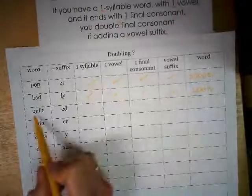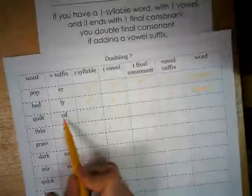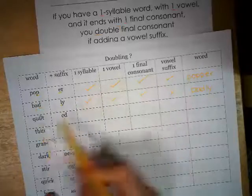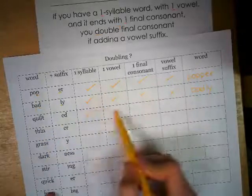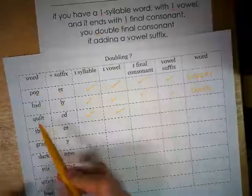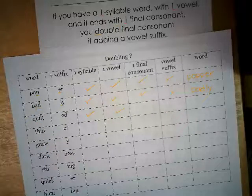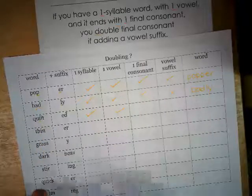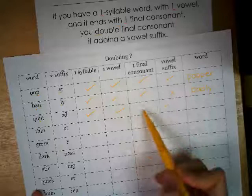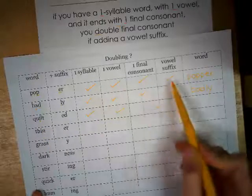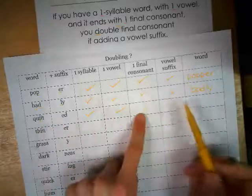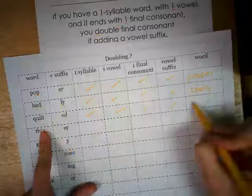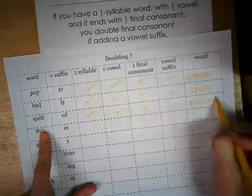This word is 'quilt' and we're adding E-D, which is a vowel suffix, so we do have to go through the checklist. Does quilt have one syllable? Yes. Does it have one vowel? Yes — the U in Q-U is not a vowel here, it's married to Q, stuck like glue. The one vowel is I. Does it have one final consonant? No, it has two. Even though it is a vowel suffix, because it has two final consonants, I don't have to double that T — I just add the E-D.